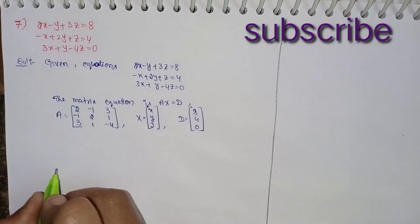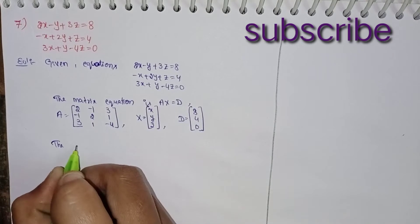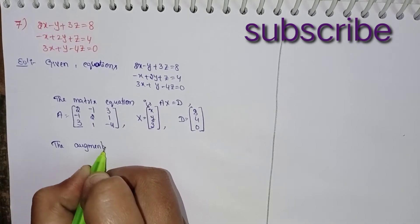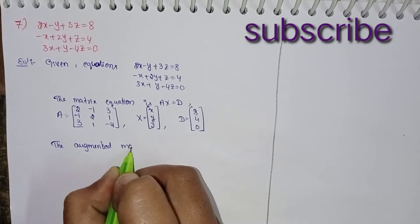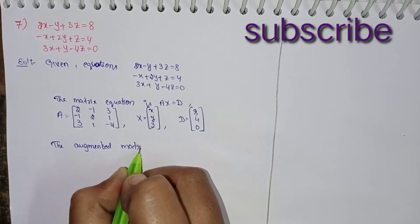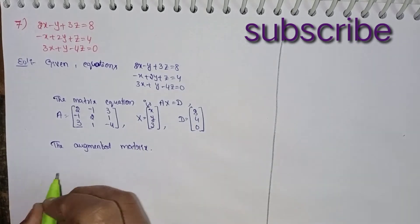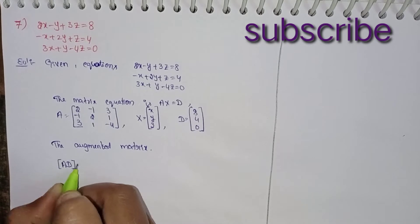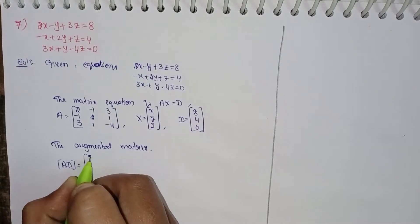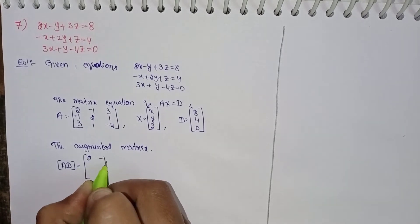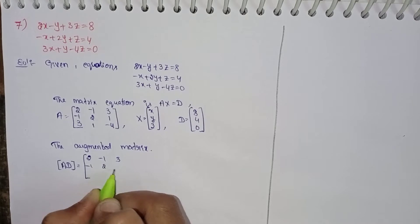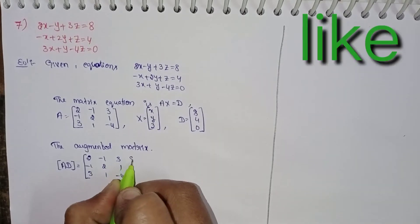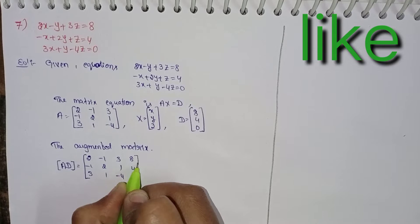Now you can write this in the form of Ax equal to D. The matrix equation is Ax equal to D, where A equals — write x coefficients — 2, minus 1, 3, minus 1, 2, 1, 3, 1, minus 4. x equals x, y, z. D equals 8, 4, 0.